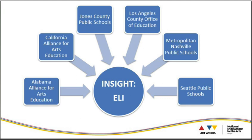Create California was launched as the result of California's participation in the NEA Education Leaders Institute in 2011. Create California promotes systemic change in California's education system by making the arts central to the everyday K-12 curriculum. With a leadership council consisting of five organizations — including the California Alliance for Arts Education, the California Department of Arts Education, the California Arts Council, the California PTA, and the California County Superintendent's Educational Services Association — NEA funding will build organizational capacity, cultivate public will, gather baseline data for an arts education report card, and convene stakeholders across the state.